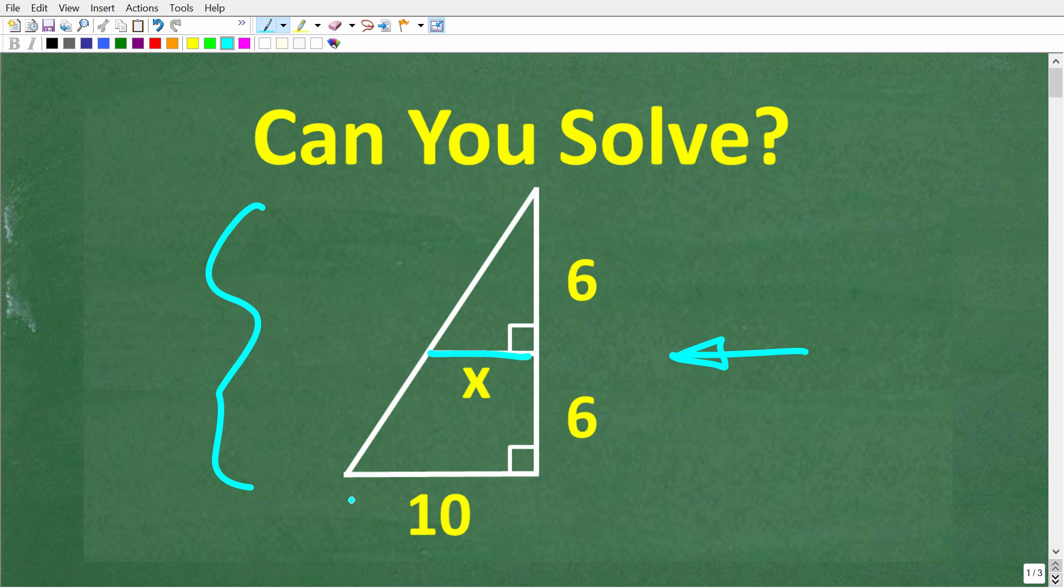We have a small triangle, and by the way, these are right triangles inside of a bigger right triangle. And what we're trying to do here is find this length x. But we do have some information here. The base of the big triangle is 10, and right here, the height of the small triangle is 6, and then this length is 6 as well.